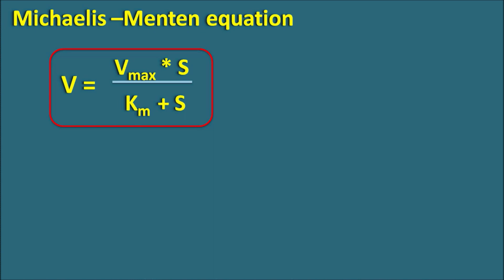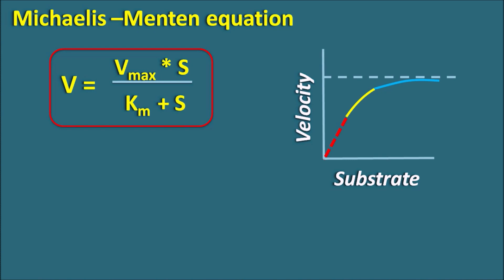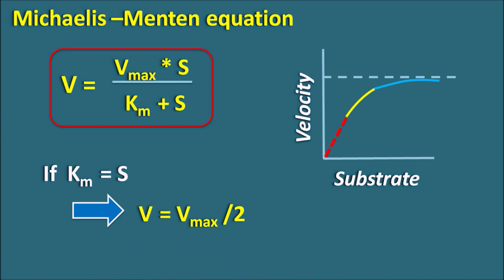This is a relation between the velocity of the enzyme-substrate reaction versus substrate concentration. When we plot velocity versus substrate concentration, we get a non-linear plot that achieves a maximum velocity called Vmax. Km is the Michaelis-Menten constant. If Km equals S and we substitute these values, then V equals Vmax divided by 2. So Km is the substrate concentration at which the velocity of the reaction reaches half of the maximum velocity.